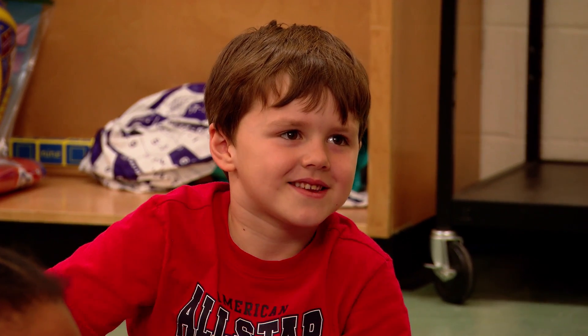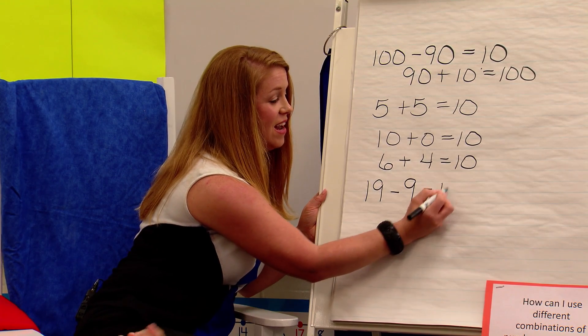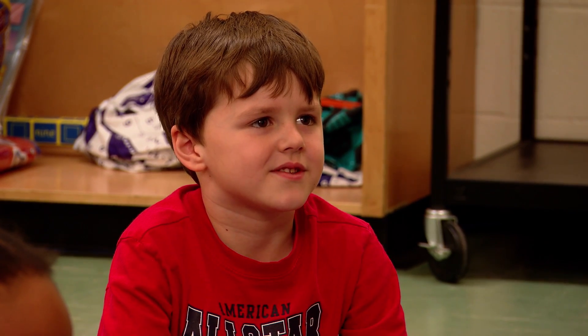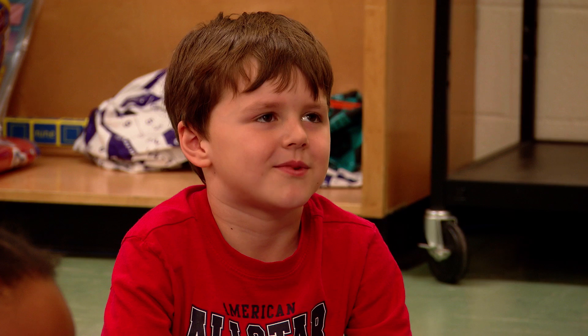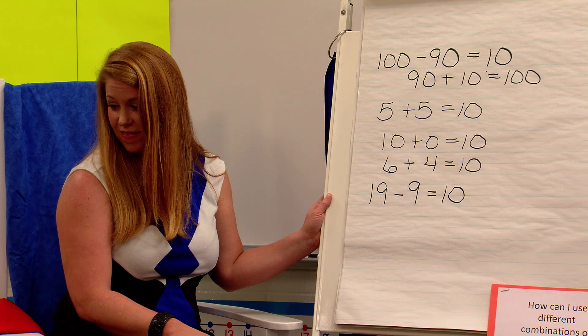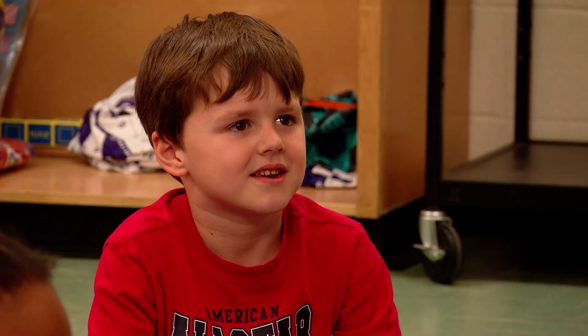Levi? 19 minus 9. How did you know that 19 minus 9 equals 10? Because the 1 means it's one stack of 10, and the 9 means there's 9 blocks, so if you take away the 9 blocks it just leaves 10. I know the frameworks have helped me be successful as a teacher when I see the amazing growth my students have made. I have kindergarteners performing at a second grade level in math — that's phenomenal.